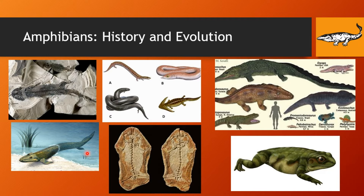Although tetrapods were amphibian-like, it was not until around 320 million years ago — about 80 million years later — that we see the first true amphibians, which are similar to modern-day amphibians such as frogs and salamanders.